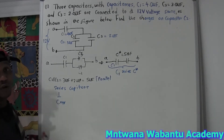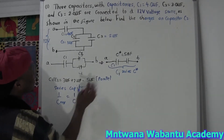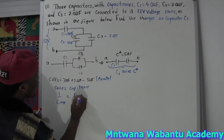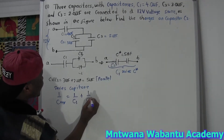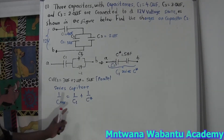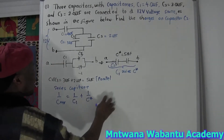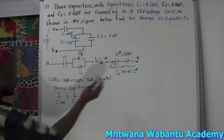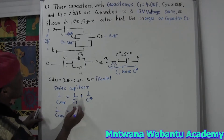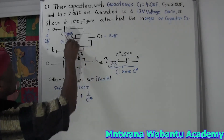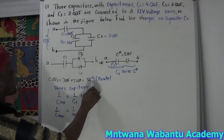So: one over C_total equals one over C1 plus one over C-star. C1 equals 4 microfarad and C-star equals 5 microfarad. So we get one over 4 plus one over 5.